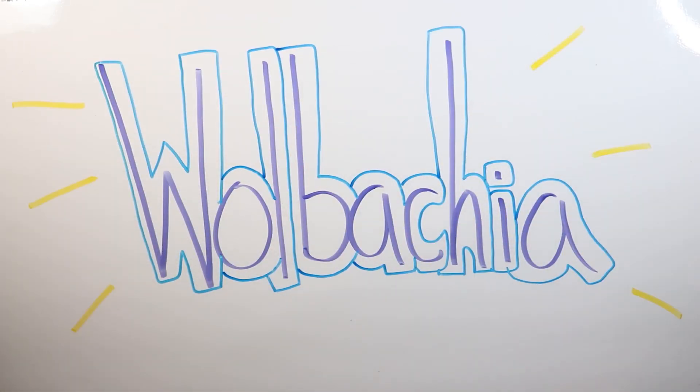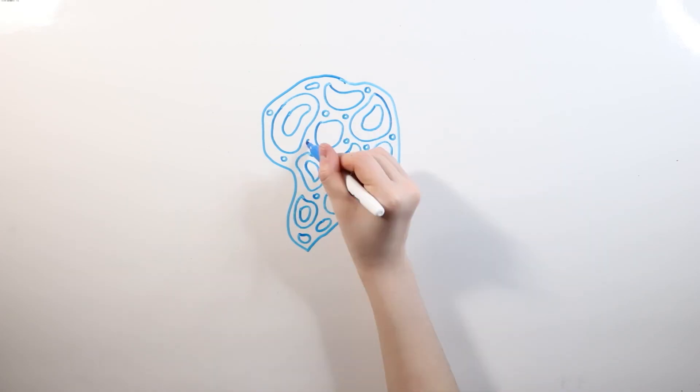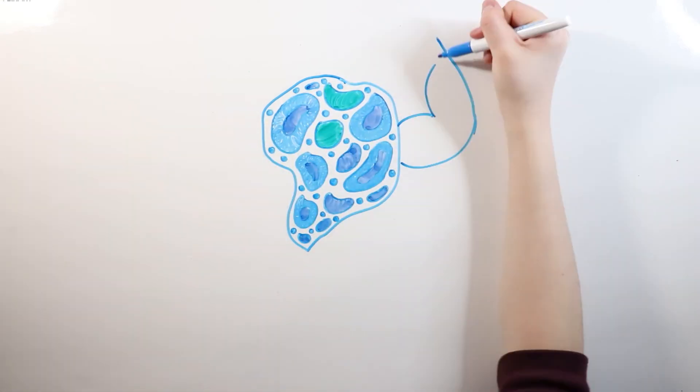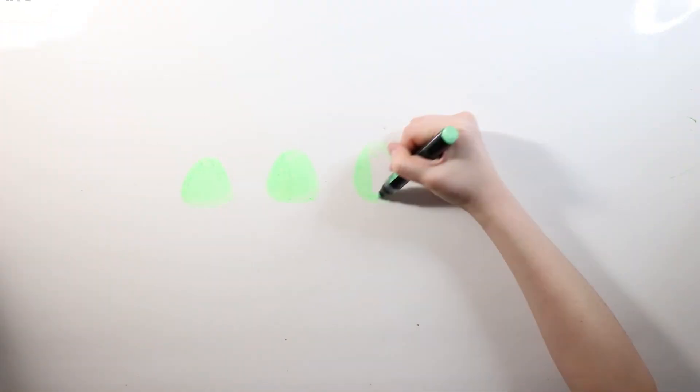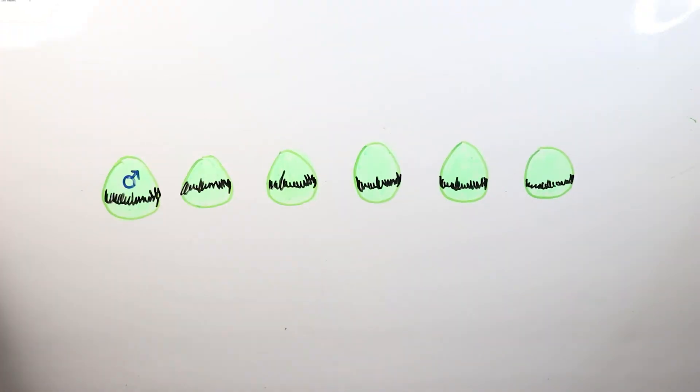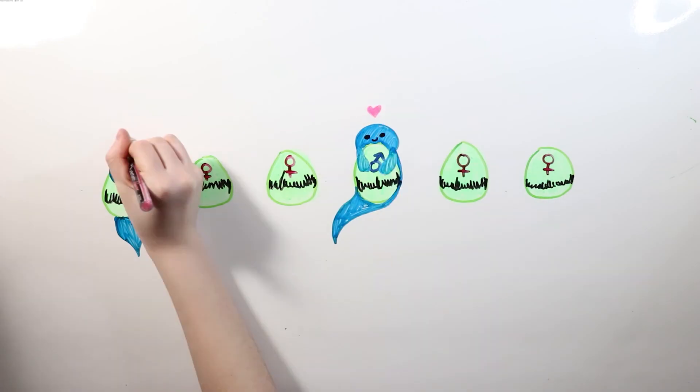A parasitic bacteria named Wolbachia was to blame for the dwindling numbers of the male population. The bacteria gets passed down by the mother and selectively kills the males before they even get a chance to emerge from their eggs.